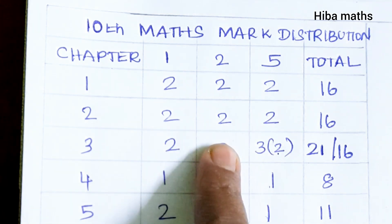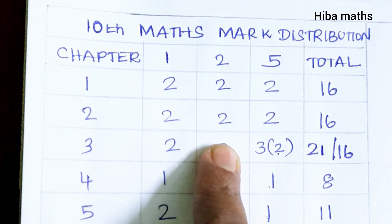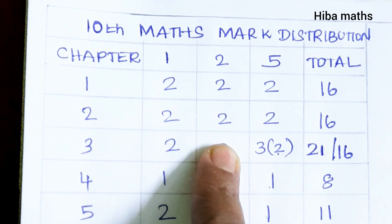In the 2-mark section, it is from exercise 2.4. The n value is 1, 2, 3. The mod functions are from 2.1 and 2.2 for the 2-mark questions.